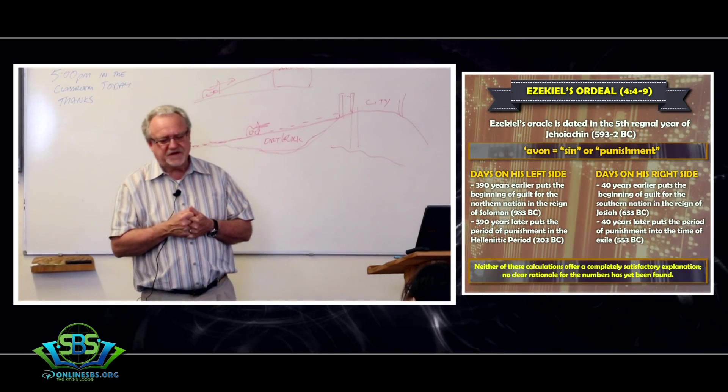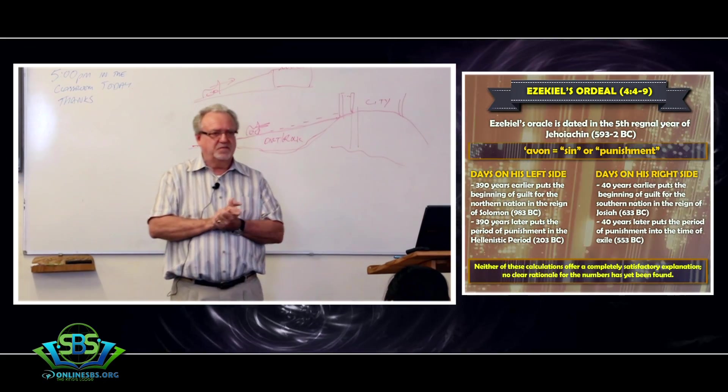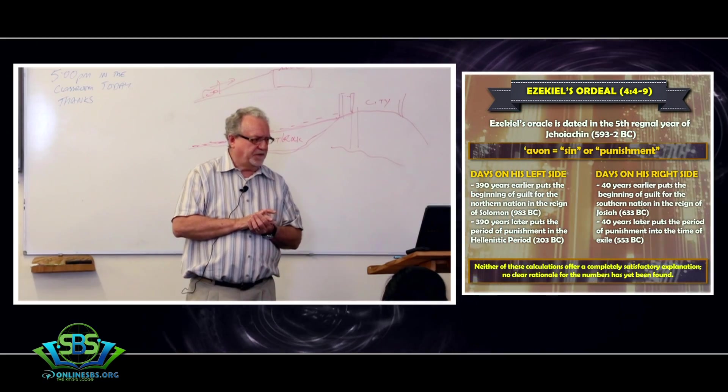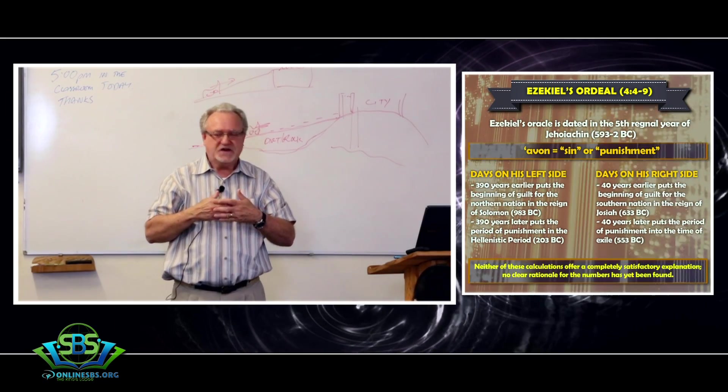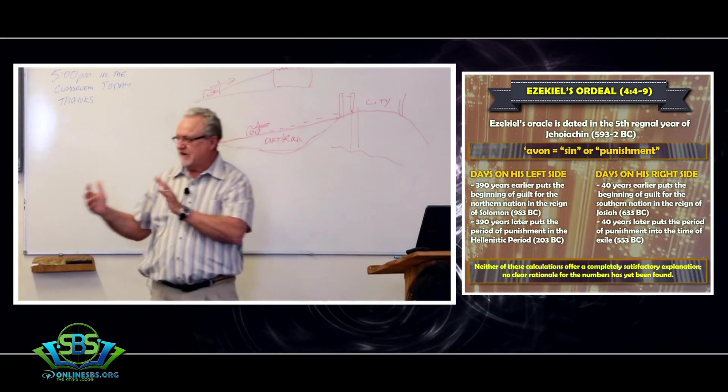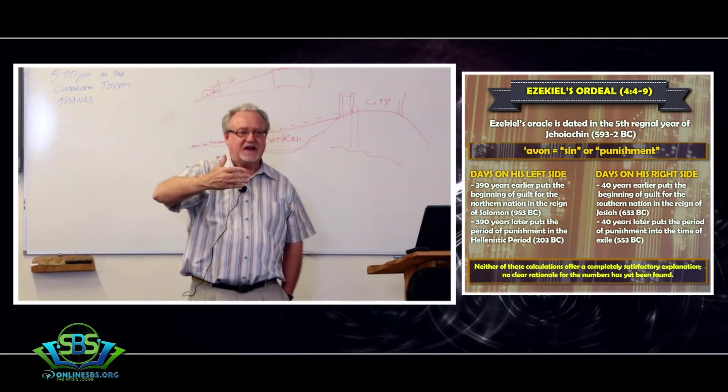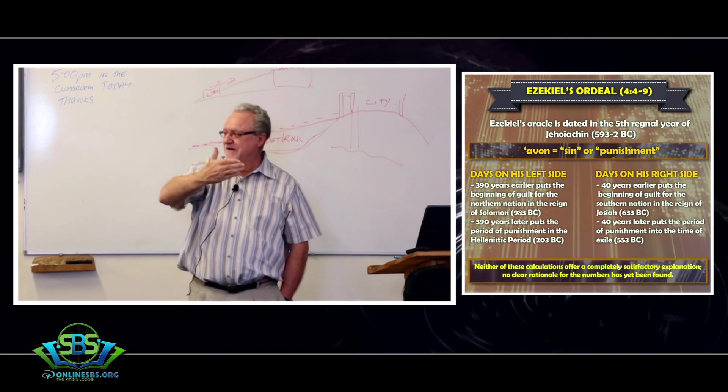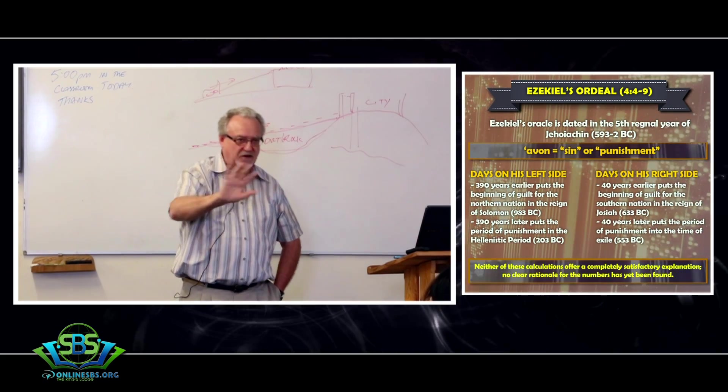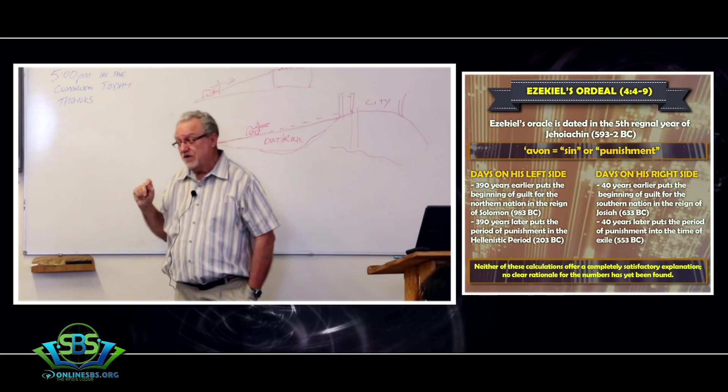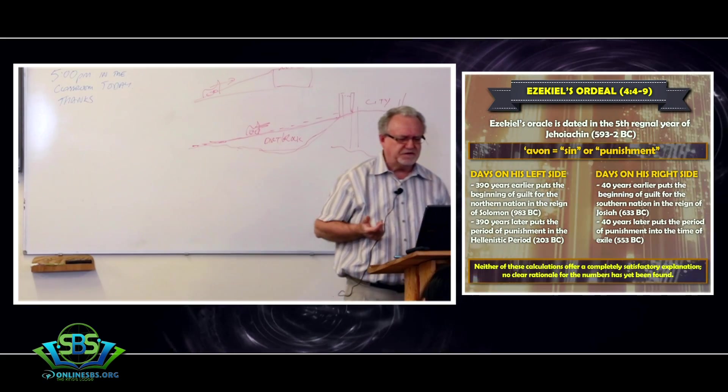In lying on the side, he's symbolizing either the sin or the punishment of the nation because of its sins. And he also puts this metal plate between himself and the city, which if you keep reading the passage, you find out this is a way of saying that God is not going to look with favor on the city. He's going to be sort of blocked off so that he doesn't see the city with compassion. It's a way of saying that the city is going to go through this ordeal and God is not going to rescue it from this ordeal.